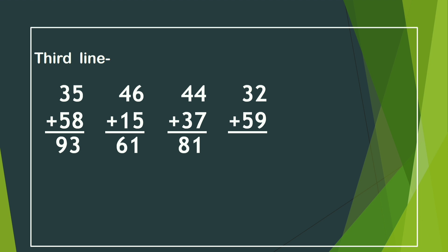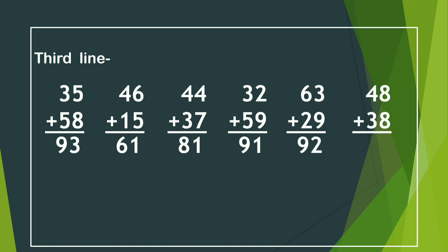For 32 and 59, we count after 9 up to 2, which gives 11. We write only 1, and the other 1 is added with 3: 3 and 1 is 4. Then we count after 9 up to 3: 10, 11, 12. In this 12, we write only 2, and the 1 is added with left side 6: 6 and 1 is 7, 8, 9. So our answer is 92.